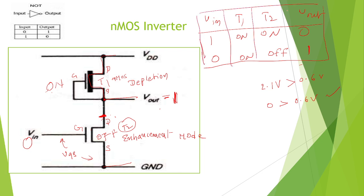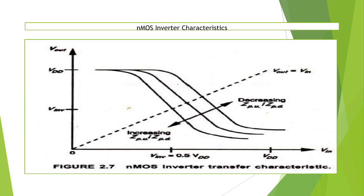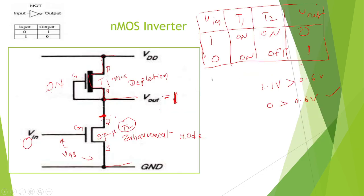We can draw the input-output characteristics for the NMOS inverter. When VIN is 0, output is high — assume it is 1. When VIN is 1, output is 0. At the midpoint you get the same values: 0.5 and 0.5. These are the characteristics of the NMOS inverter. This is how you can design an NMOS inverter. Thank you.